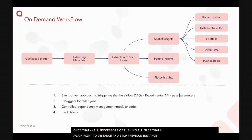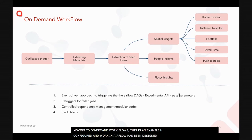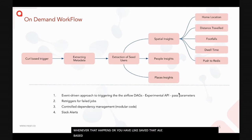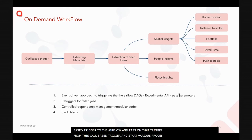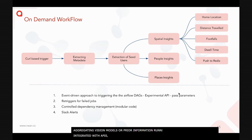For on-demand workflows, whenever a client selects an audience and saves a card on the platform, it triggers a curl-based trigger to Airflow. We extract metadata from that trigger and kick off a series of processes: extracting seed users, running aggregate models, running Bayesian models with prior information, and running spatial insight models to derive home location catchment, average distance traveled, and footfall. Once all processes complete, results are pushed to the production API layer.